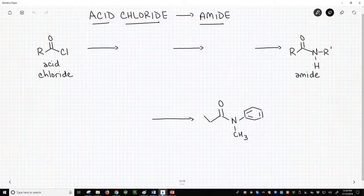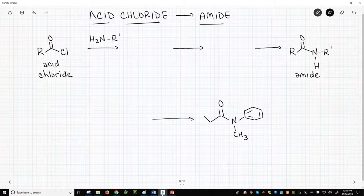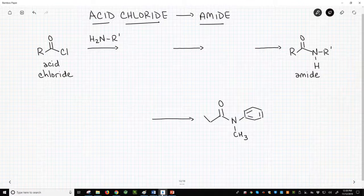We react the acid chloride with a neutral amine. The amine needs to have at least one NH group. Amines are neutral, but they are still nucleophilic.